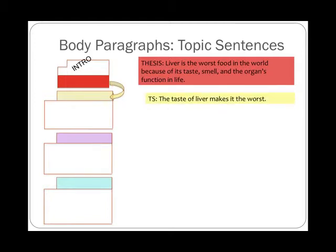So if we had the first topic sentence, we might reword this to say 'The taste of liver makes it the worst.' You notice here that liver is still in there — the topic mentioned in the thesis is still in that topic sentence. We also have the claim: the claim is that it's the worst. And then we're also having the reason — the first reason is taste. But you see that I have switched it all around, so it doesn't sound exactly the same as it did before in the thesis.